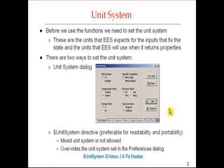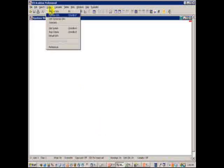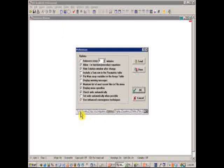Before we use property functions we really have to first set the unit system within EES. The unit system essentially specifies to EES what are the units of the input properties we will use to fix the state, and what are the units EES will use when it outputs a property to the equations window. There are two ways to set the unit system. One is to go to the Preferences dialog and select the Unit System tab, so let's go to EES: under Options > Preferences, one of the tabs here is Unit System.